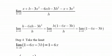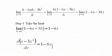Okay, so I say that the derivative of x minus 3x squared with respect to x equals 1 minus 6x.